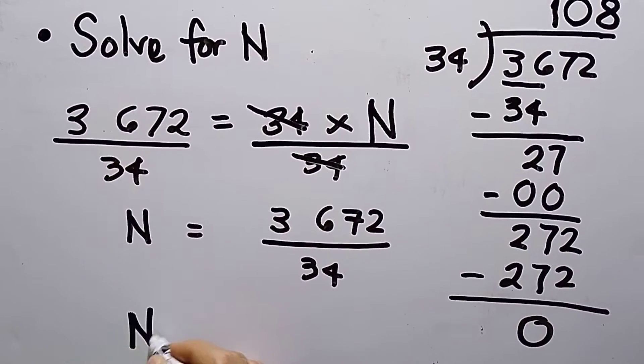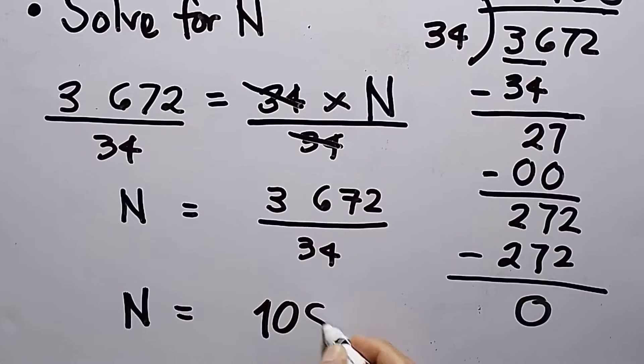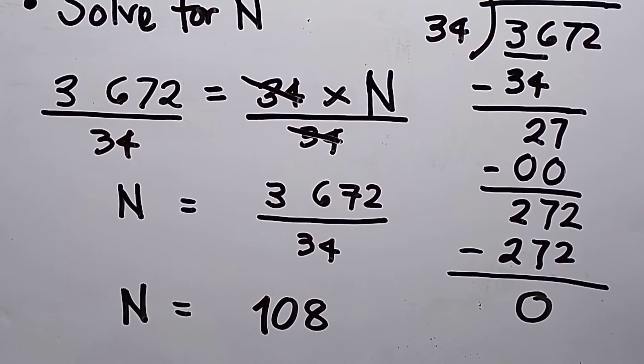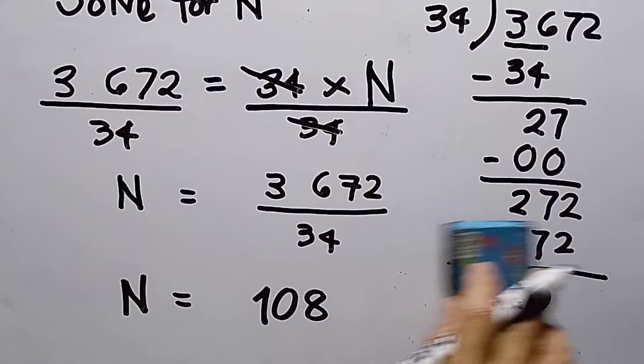So my quotient for number 1, or my answer for number 1, is 108. How do we know that this is correct? Let us check.